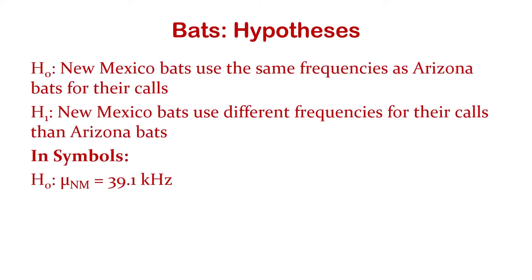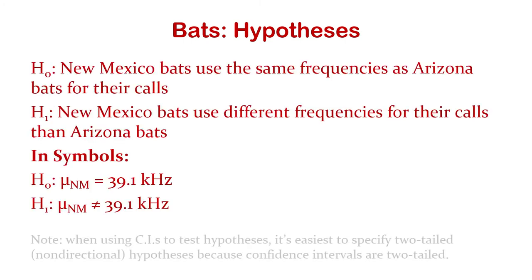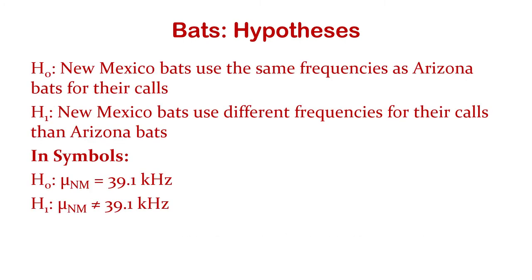In symbols, it's all about the true population mean of New Mexico bats, and 39.1 is the Arizona value. The null hypothesis: New Mexico bat calls come from a population with the same mean as Arizona — the same kind of bats using the same kind of calls. The alternative: they're not the same.